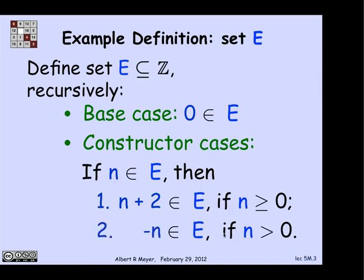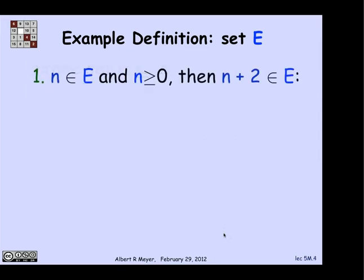The second constructor is that if you have an n that's in E, you can negate it. You can take minus n, providing that n is positive. And those are the two constructor rules. Let's look at what goes on here. What is this telling us?